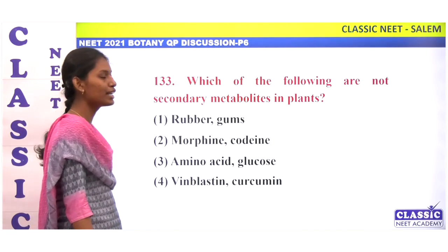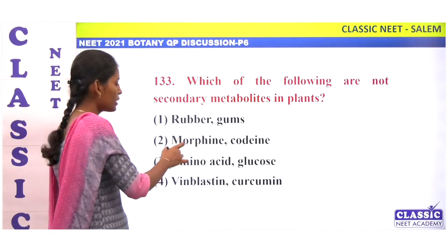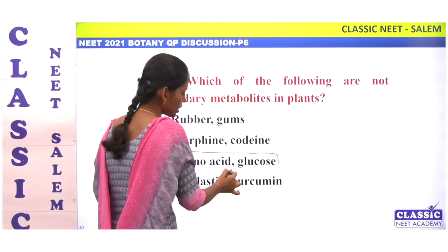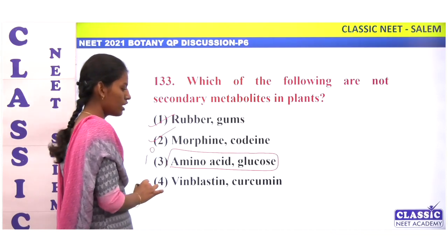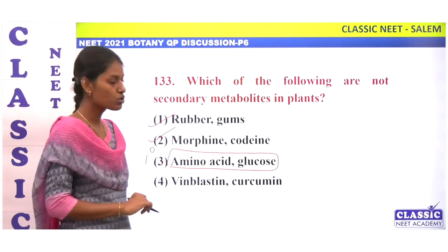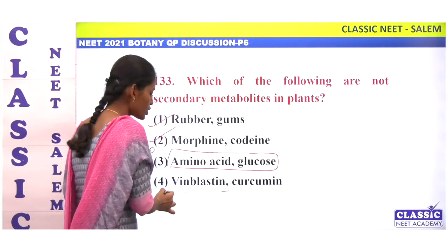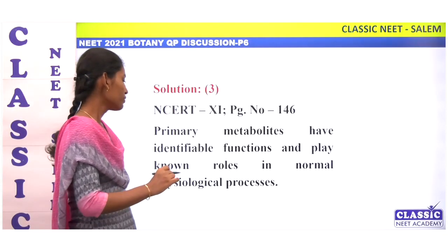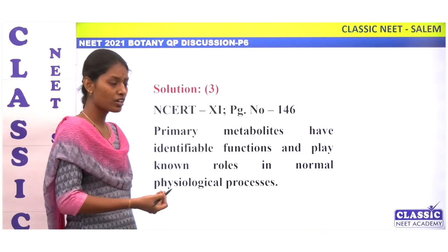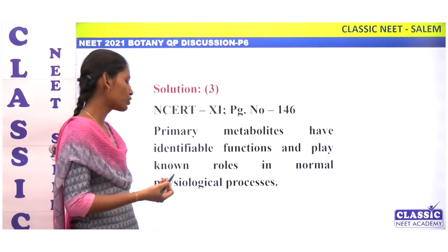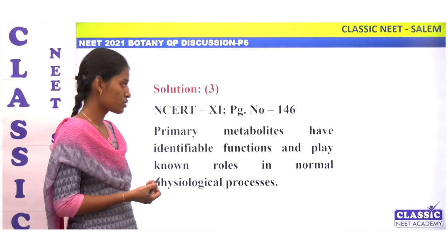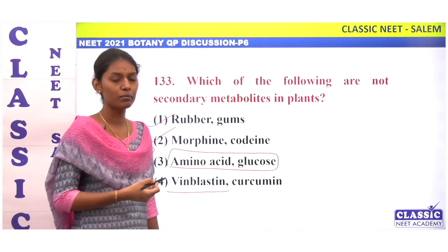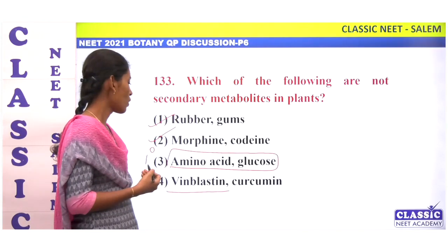Which of the following are not secondary metabolites? Rubber and gum are secondary metabolites. Morphine is also a secondary metabolite. Amino acids and glucose are primary metabolites — they are not secondary metabolites. Option 3.